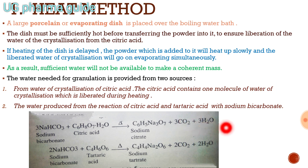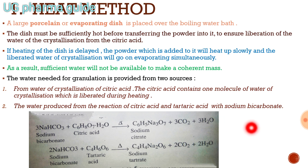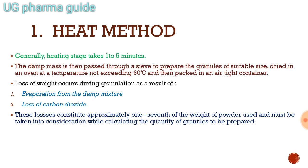This reaction will definitely be asked in externals if you get this practical. You should remember where the water of crystallization comes from in the heat method. Generally, the heating stage takes one to five minutes. The damp mass is then passed through a sieve to prepare granules of suitable size, dried in an oven at a temperature not exceeding 60 degrees Celsius, and then packed in an airtight container.